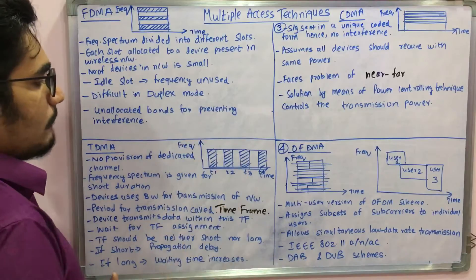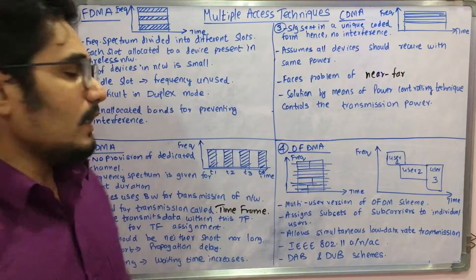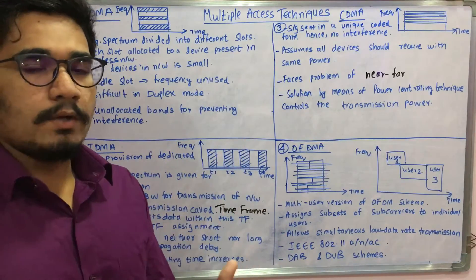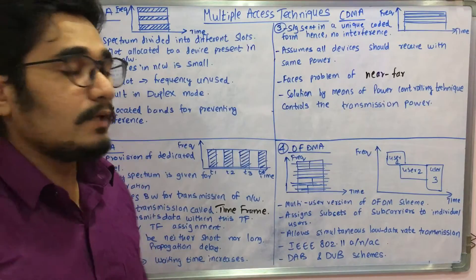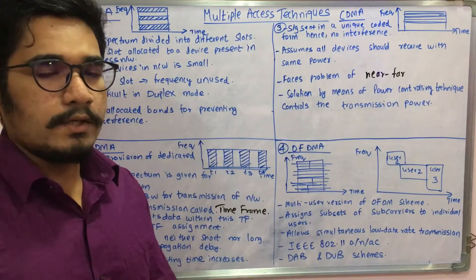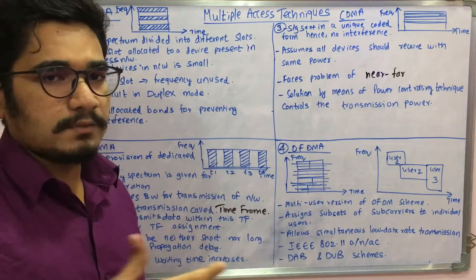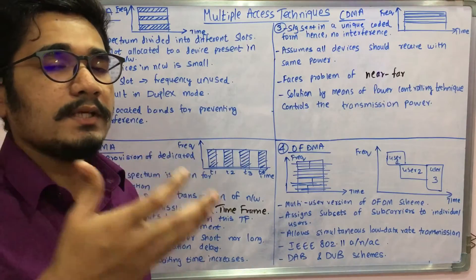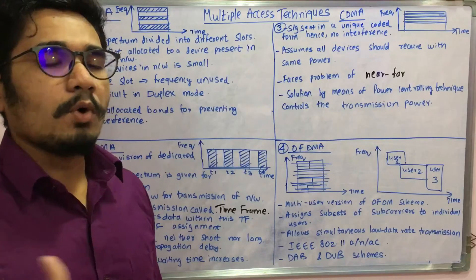If device one is given time one, then it can only do the data transfer or any activities within that time. It cannot go into time two and do its activity. Every device has been given different time slots, and within that time slot it has to operate or do the data transfer operations.